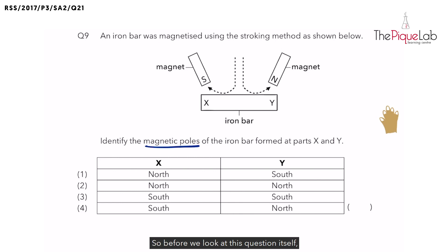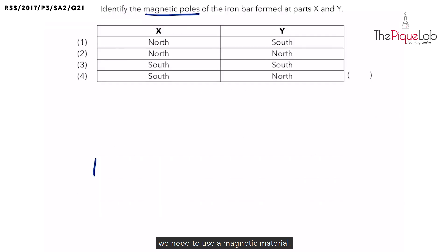So before we look at this question itself, let me recap with you on how to determine the poles of the temporary magnet made using the stroking method. First, do take note for the stroking method to work, we need to use a magnetic material.